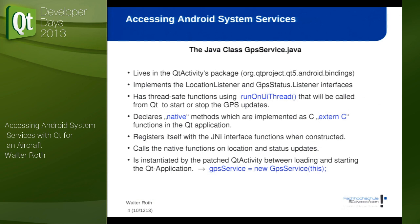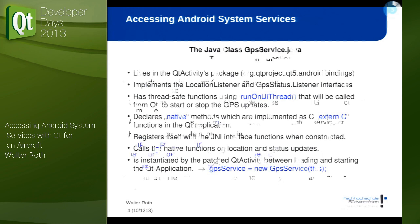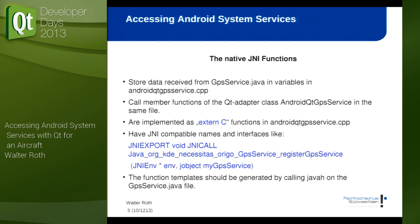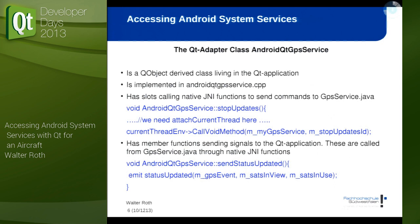GPS service.java is a Java class living in the Java environment in Android. It implements native functions, and those native functions call the JNI functions and transfer the data. The patch in the Qt activity is one of two lines — the other simply declares a variable for GPS service. The transfer mechanism from JNI to Qt is done by a class derived from QObject, which can send signals and receive slot calls, and this bridges between the threads.